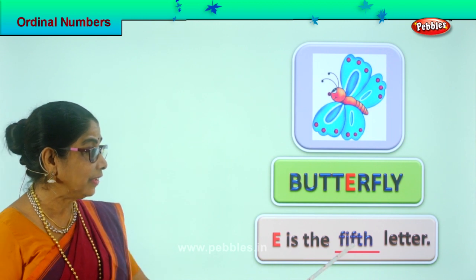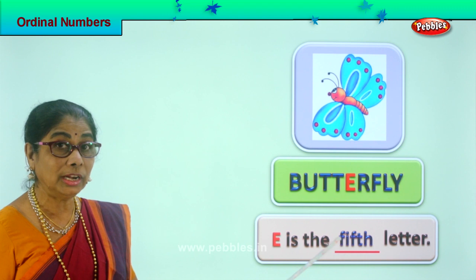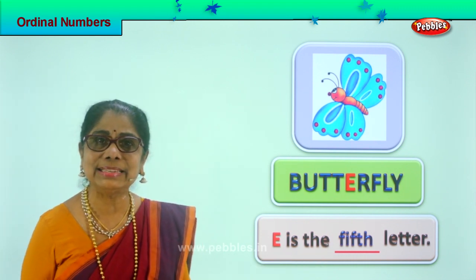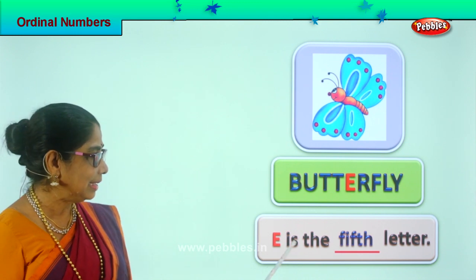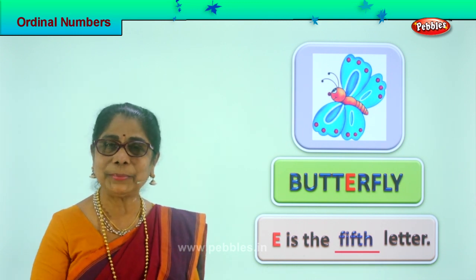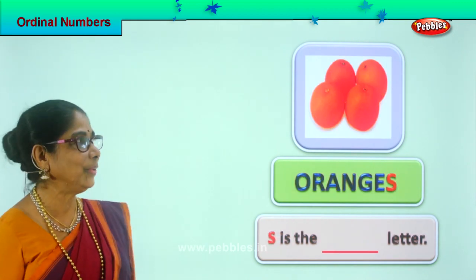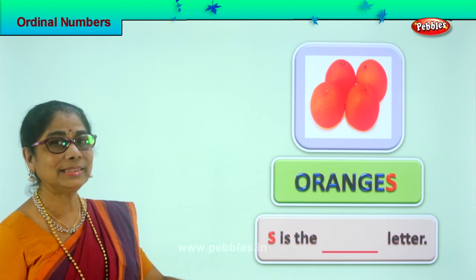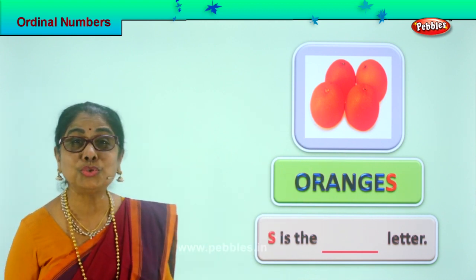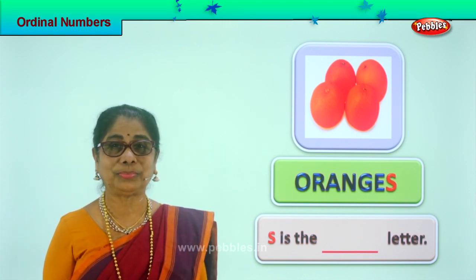Remember, you are not only finding out the ordinal position — you are also learning to read the full sentence. E is the fifth letter. Good, did you enjoy? Let's take another picture. Look what you have here — you love this. What is that? Yes, oranges! Juicy oranges.